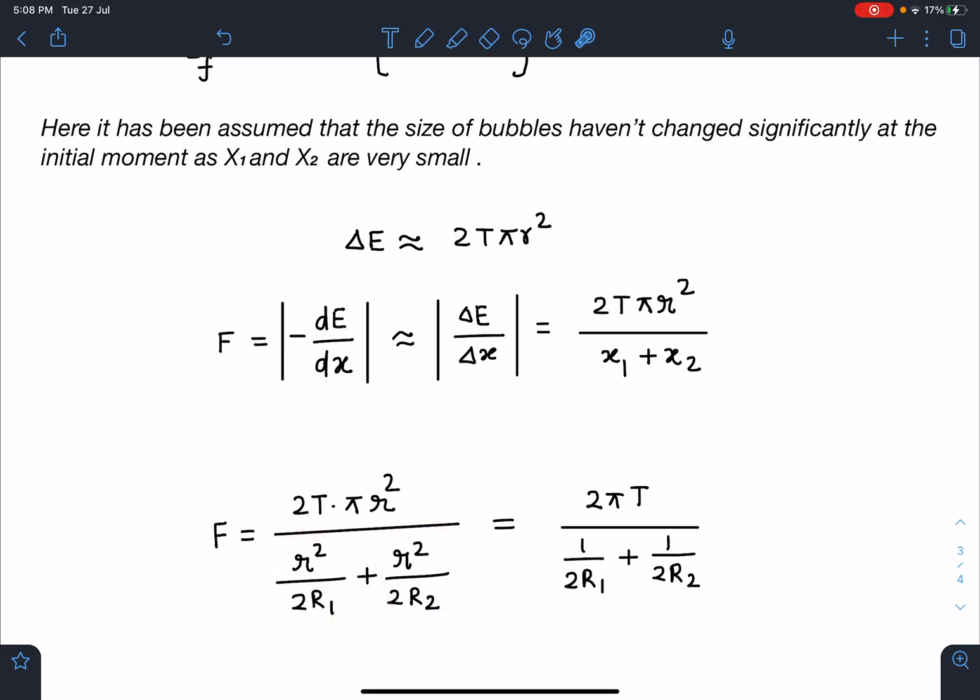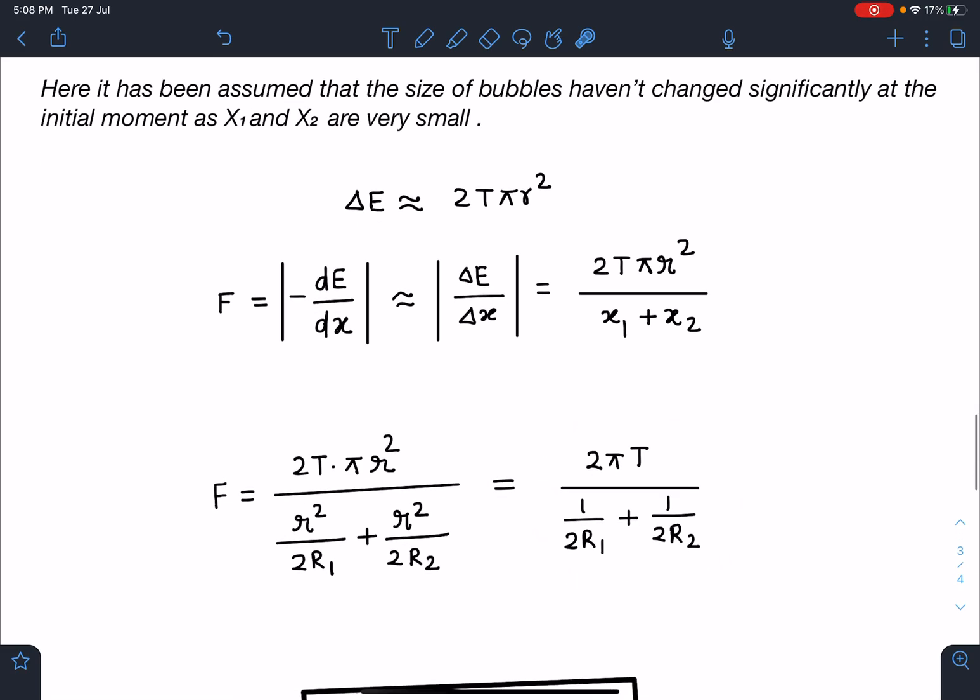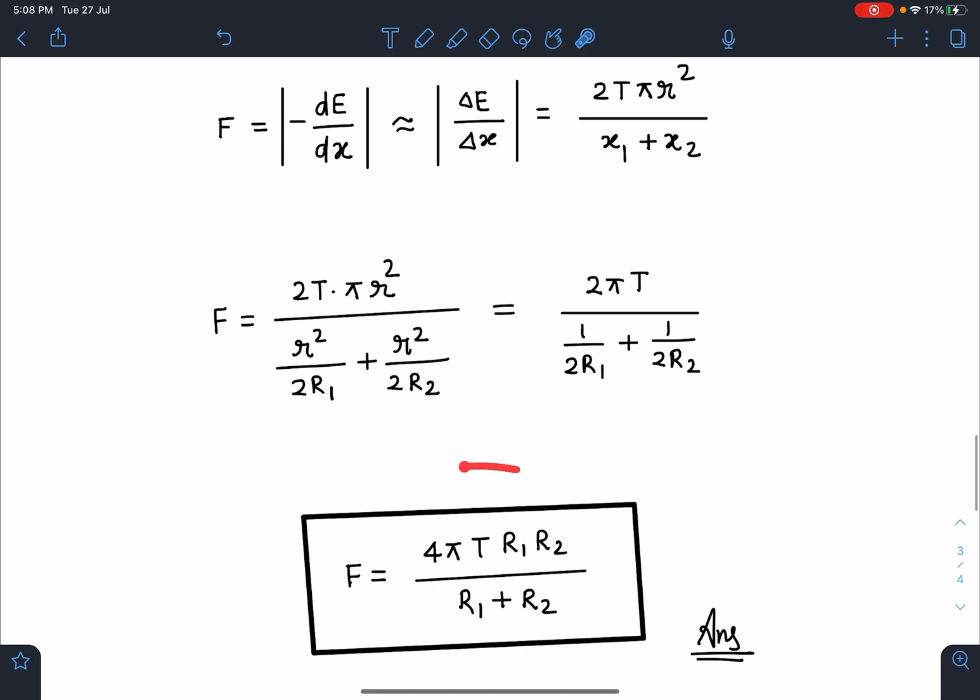r² gets cancelled, and we get 2πT times (1/2R1 plus 1/2R2). And if you simplify this, we get this answer as 4πTR1R2/(R1 plus R2). This is the final answer for this problem. Thank you.